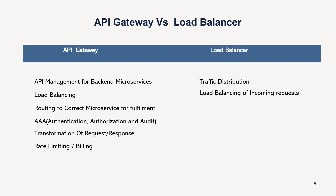Rate limiting and billing are also provided by API gateway. Suppose a particular service can handle a certain number of requests per millisecond, but there is a surge of incoming requests — if you allow all of them, the application could go down. Rate limiting allows you to limit the requests served by the service and drop the extras. Additionally, if you have monetized APIs and charge customers on a per-request basis, you can use the billing capability of API gateway to generate statements and charge customers.